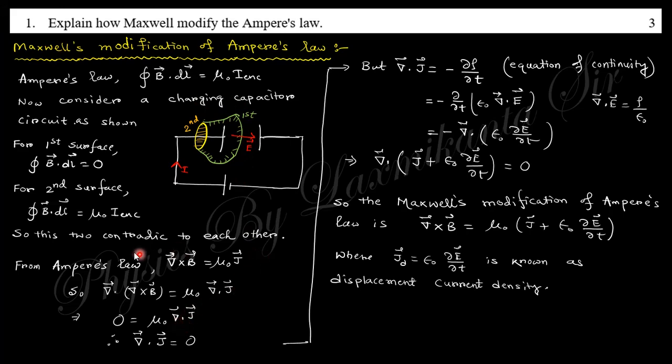He introduced this displacement current density which actually arises due to the changing of the electric field. The current flow can produce the magnetic field, as well as the changing of the electric field can also produce the magnetic field. This is equivalent to a current density which is nothing but the changing of the electric field. This current density actually produces the magnetic field. This modified equation is actually known as the Maxwell modification of Ampere's law. Here the notes are given, you can write down in the examination.